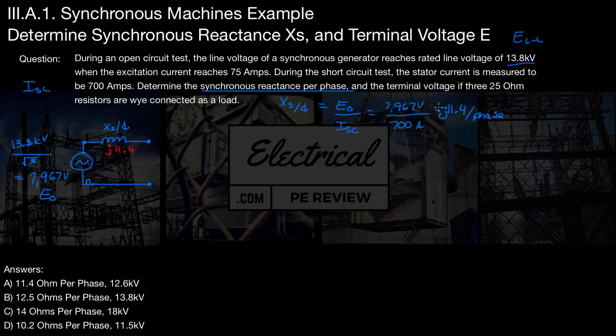That means this guy right here is going to be equal to j11.4. Real quick, that looks like a negative sign. That's really just an equal sign. Perfect. Next, the problem says three resistors are connected in Y as a load of 25 ohms.